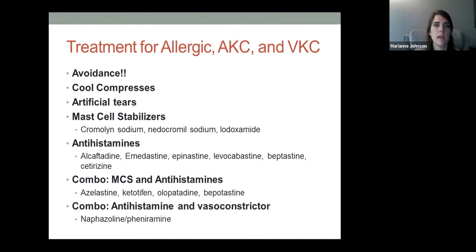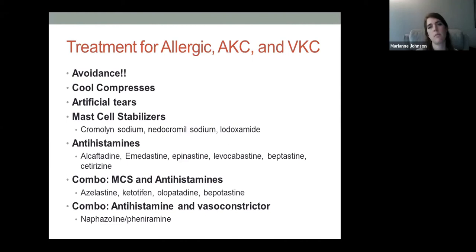Treatment options include allergen avoidance if you know the allergen, cool compresses, artificial tears, and fortunately many over-the-counter options are helpful. Mast cell stabilizers, antihistamines, and combination medications are all useful. Combination medications work well for acute flare-ups, but mast cell stabilizers in isolation tend to do a better job at preventing histamine release for chronic patients — something to consider for atopic, perennial, and GPC patients.